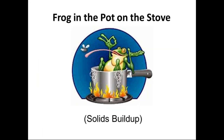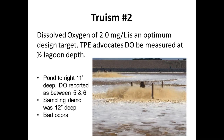Solids buildup in lagoons is the proverbial frog in the pot — it can take 10, 15, or 20 years, so the plant doesn't operate as it used to because you've lost volume and therefore HRT. A truism: 2 mg/L DO is our optimum design target. Importantly, we advocate measuring DO at half the lagoon depth — if you've got a 10-foot lagoon, look at DO at 5 feet to get a fair representation.